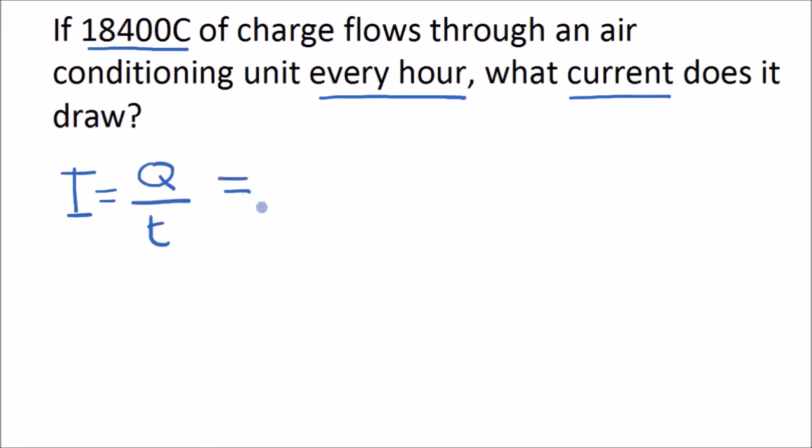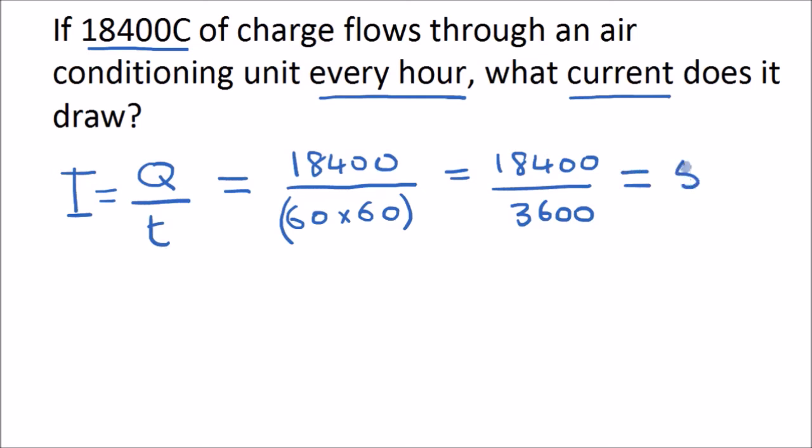So let's try plugging in some numbers. 18,400 coulombs is transferred every hour. But remember, time is in seconds, so we have to convert an hour into seconds. So it's 60 minutes times 60 seconds per minute will give you the number of seconds in an hour. So that's 18,400 divided by 3,600, and that will give you an answer of 5.12 amps.